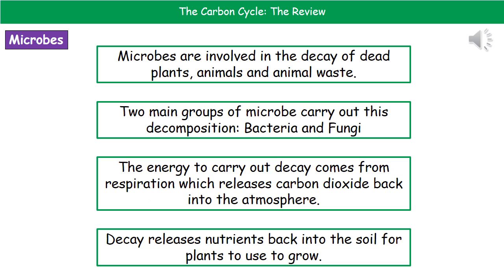One of the key organisms involved in the carbon cycle are microbes, because they are involved in the decay of any dead plants or dead animals and any animal waste. That's basically what stops us wading around in dead animals, plants, and their waste products on the surface of the earth. We've got two main groups of microbes that carry out this process of decomposition: bacteria and fungi. So if they ever ask you which organisms carry out decay or decomposition, bacteria and fungi are your two answers.